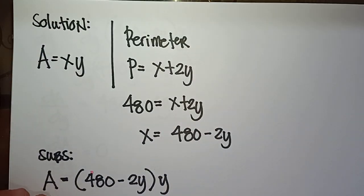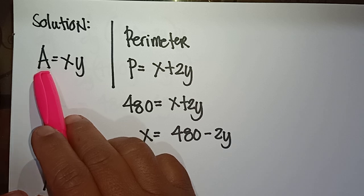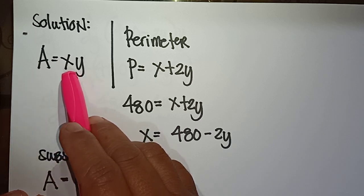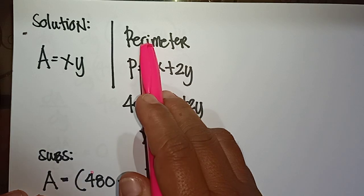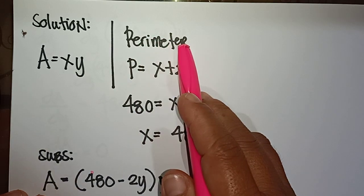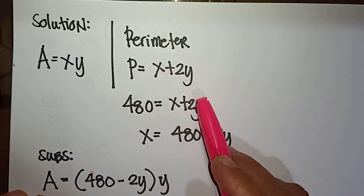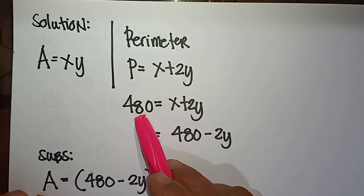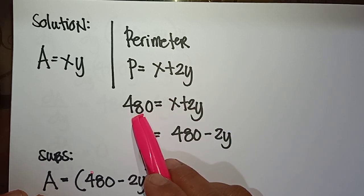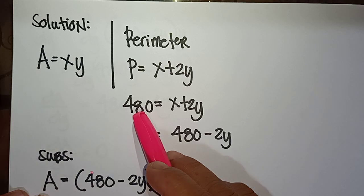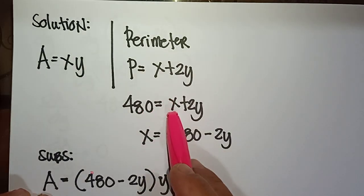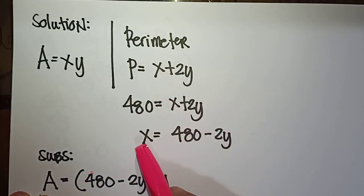Solution: The area of the rectangular field is A = xy. The perimeter of the three-sided fence is P = x + 2y, where the available fence is 480 meters, so 480 = x + 2y.